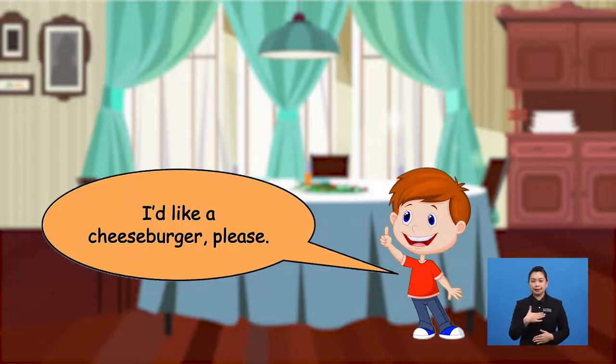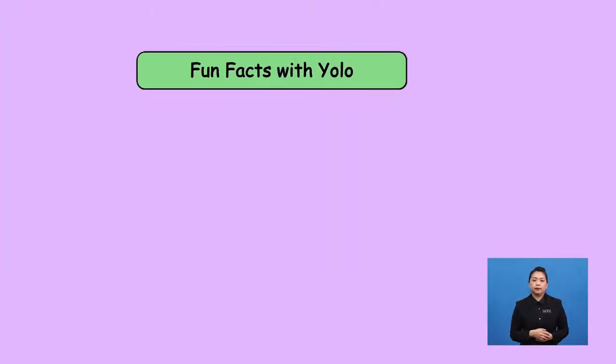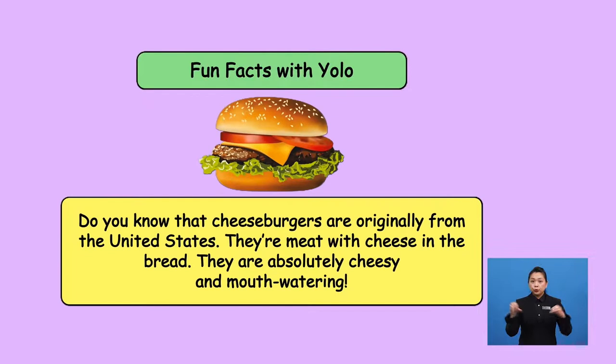So, if you want something like a cheeseburger, you can say, I'd like a cheeseburger, please. Repeat after me. I'd like a cheeseburger, please. The word is actually a short form for I would. So, you can say, I would like a cheeseburger, please. Do you know that cheeseburgers are originally from the United States? They're meat with cheese in the bread. They are absolutely cheesy and mouth-watering. Awesome!